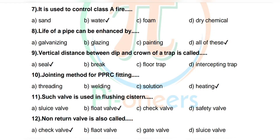Question 10: Jointing method for PPRC fitting — options: threading, welding, solvent, heating. Correct answer: heating. Question 11: Which valve is used in flushing system — options: ball valve, float valve, check valve, safety valve. Correct answer: float valve.